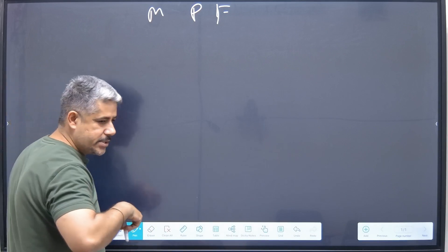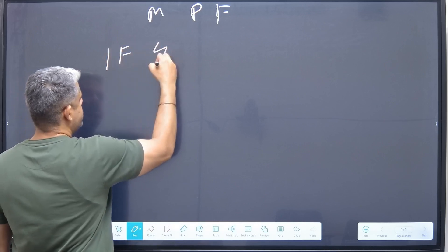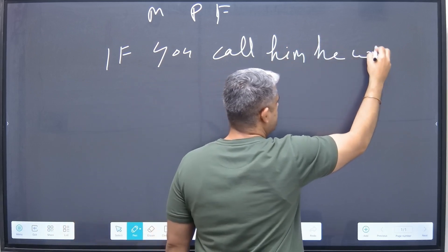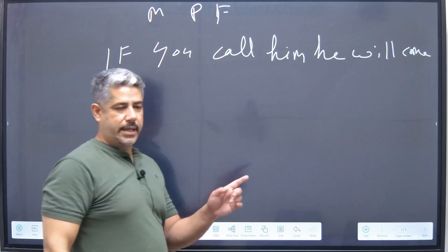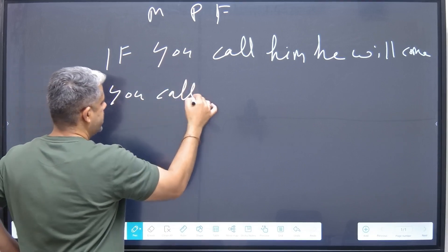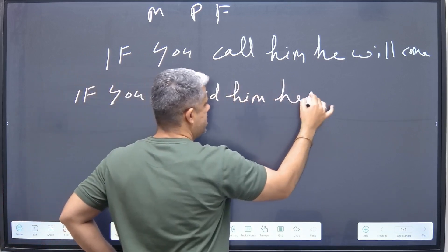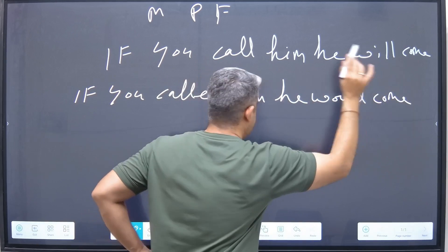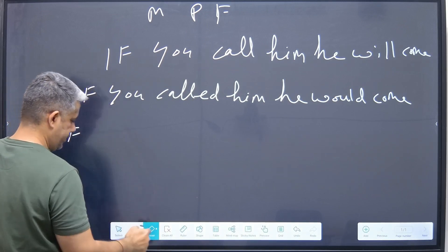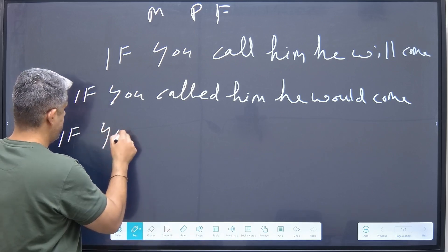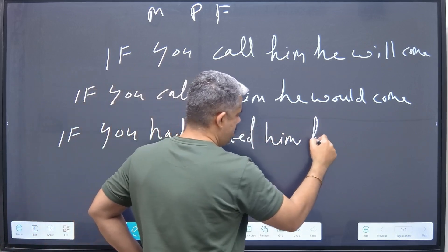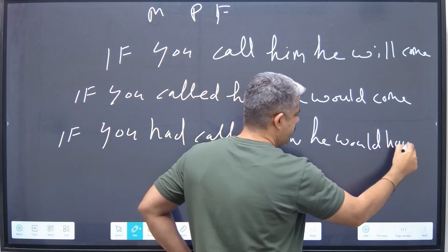You tell me the difference in these sentences — I'm writing all three for you. Number one: if you call him, he will come. Number two: if you call him, he would come. And number three: if you had called him, he would have come.